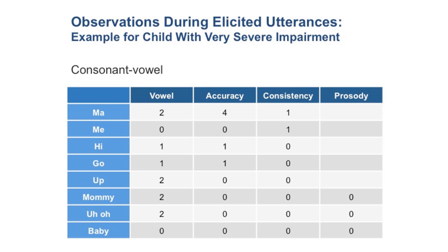Under accuracy, there's really only one item he gets correct the first time, and two others he was able to get after quite a bit of cueing. He's inconsistent over most of the trials — in some cases because he eventually gets it right, but also because the way he said it wrong varied with each trial. That's very common in childhood apraxia of speech.